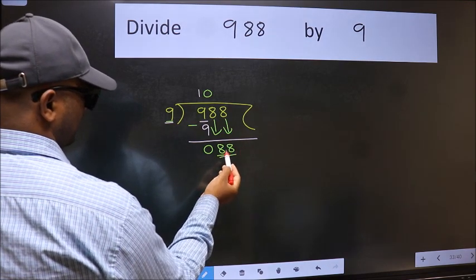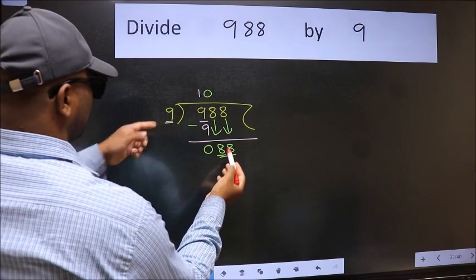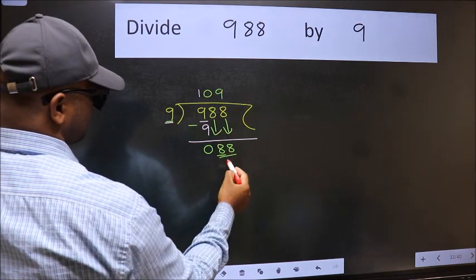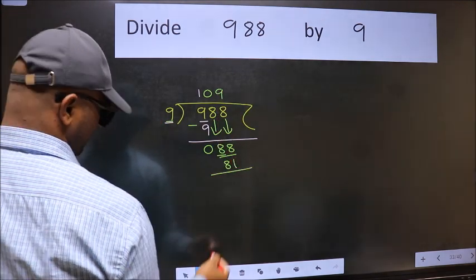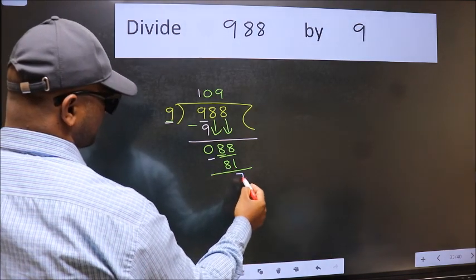Now 88. A number close to 88 in 9 table is 9 nines 81. Now we should subtract. We get 7.